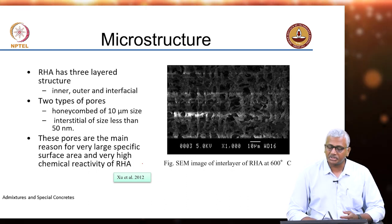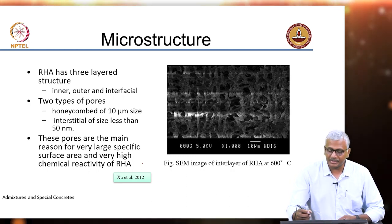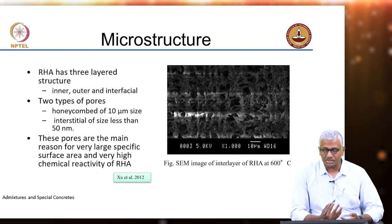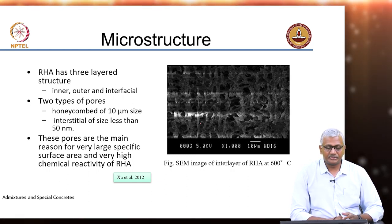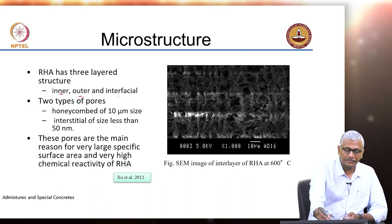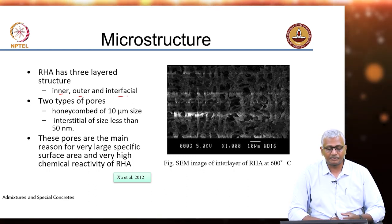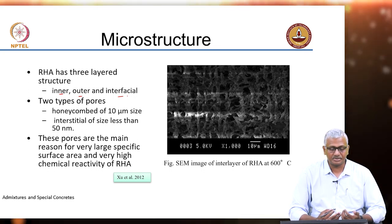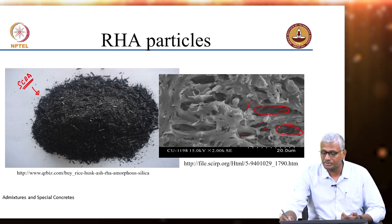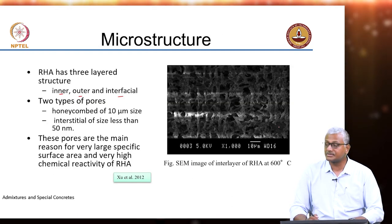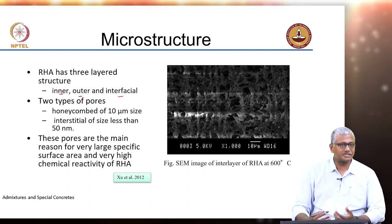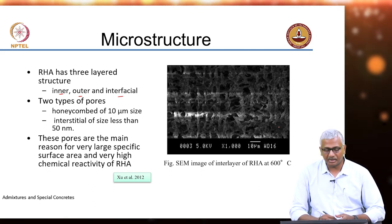Regarding microstructure — note this SEM image is not very clear due to charging of the specimen in scanning electron microscopy. Generally if you look at RHA particles closely, you have a three-layered structure: inner, outer, and interfacial, and two types of pores based on size range. You have honeycombed pores of nearly 10 micron size and interstitial pores of less than 50 nanometres. The presence of these pores and vesicles is the reason for the very high specific surface area available on rice husk ash particles.